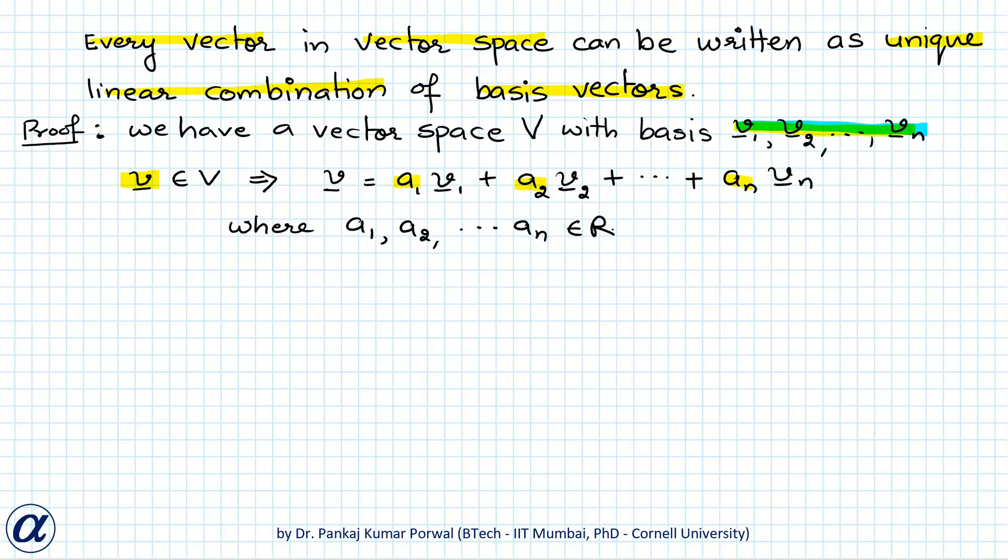Now let's say there exists another representation of the same vector v with respect to same basis but the scalar coefficients are different. So there exists another set of scalar coefficients A1 dash, A2 dash, dot dot dot, An dash and they all are real numbers. And we can write vector v as A1 dash V1 plus A2 dash V2 plus dot dot dot plus An dash Vn.